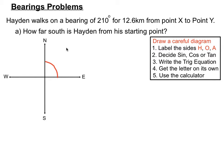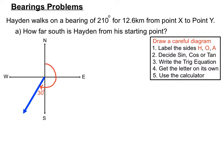We want to draw on our diagram a bearing of 210 degrees. Bearings, as you know from the previous video, go from north and always go clockwise. So we go around 210 degrees from north. The red line has gone around 90 degrees, then another 90 — that's 180 degrees — and we need another 30 degrees to create a bearing of 210 degrees. That blue line indicates a bearing of 210 degrees, going from X to Y.